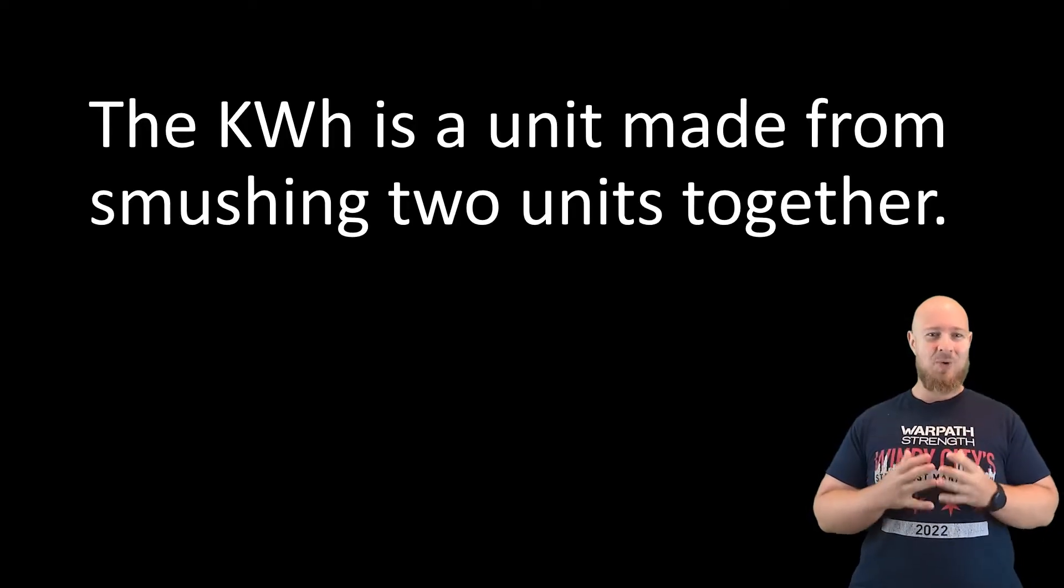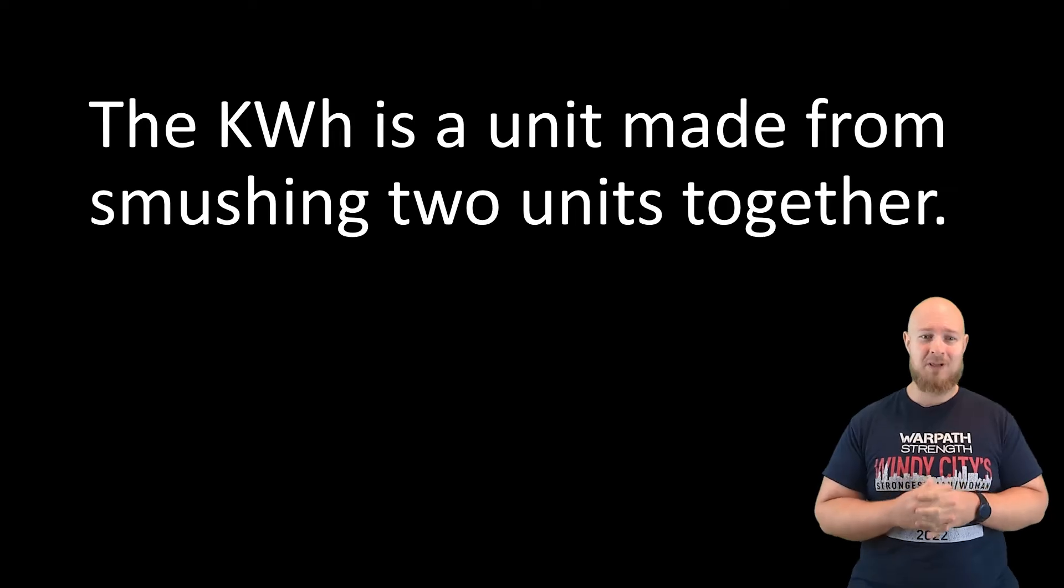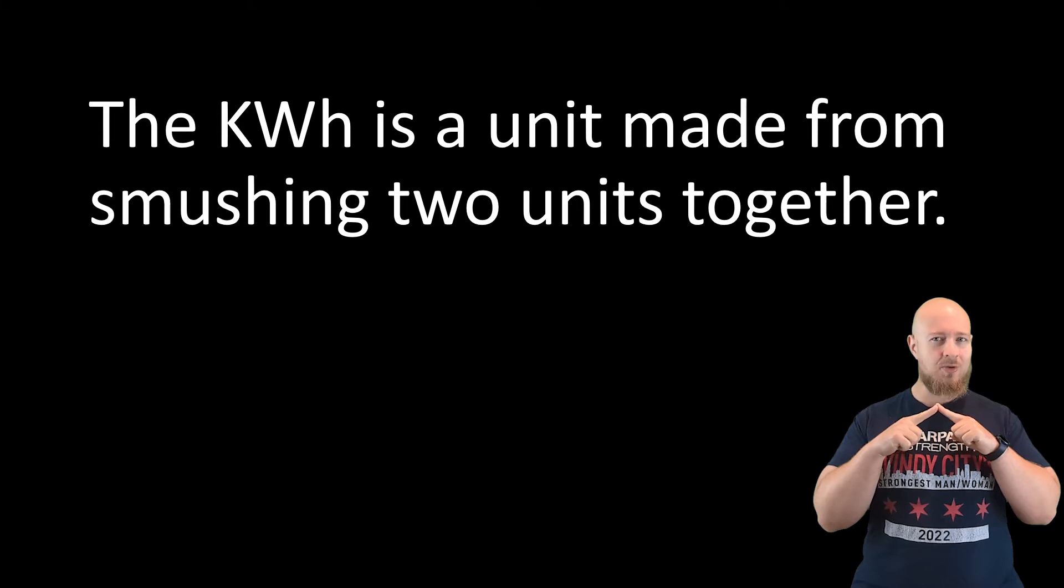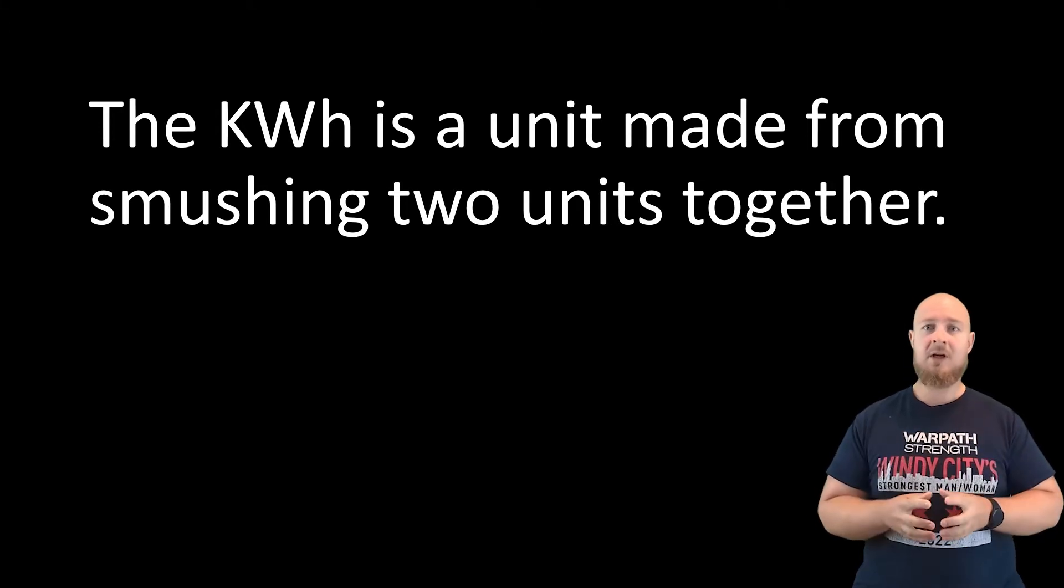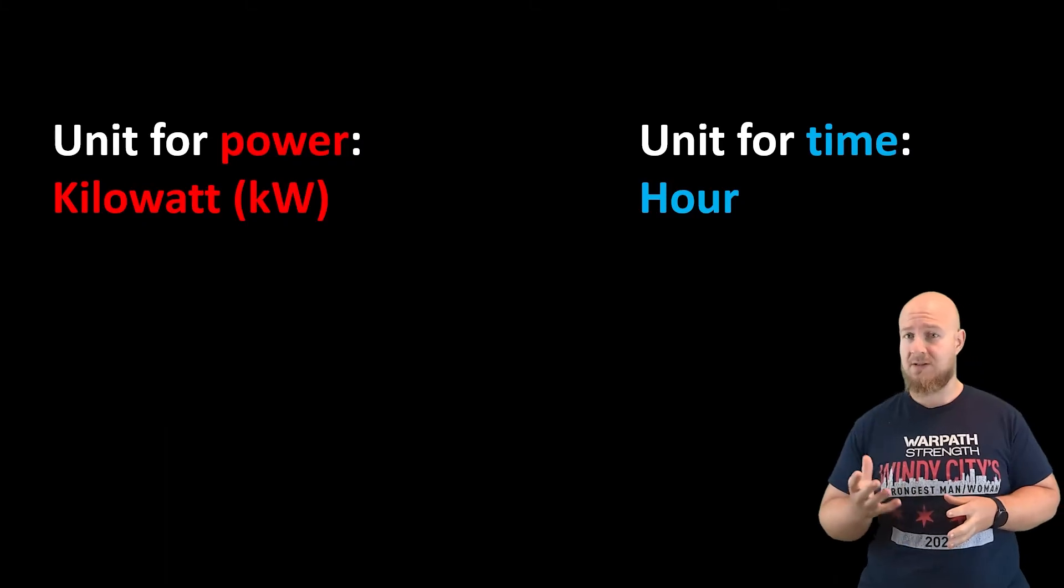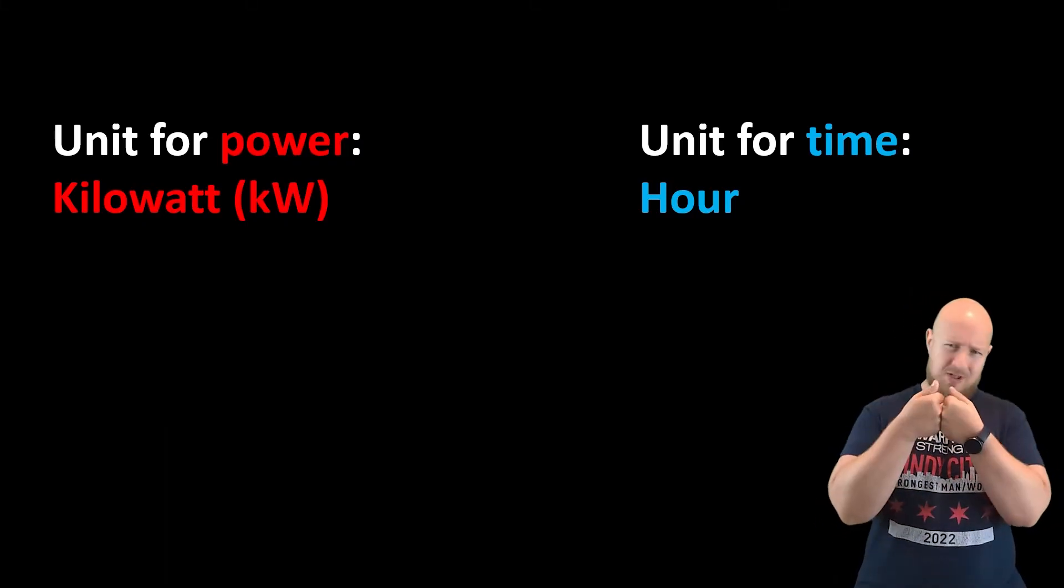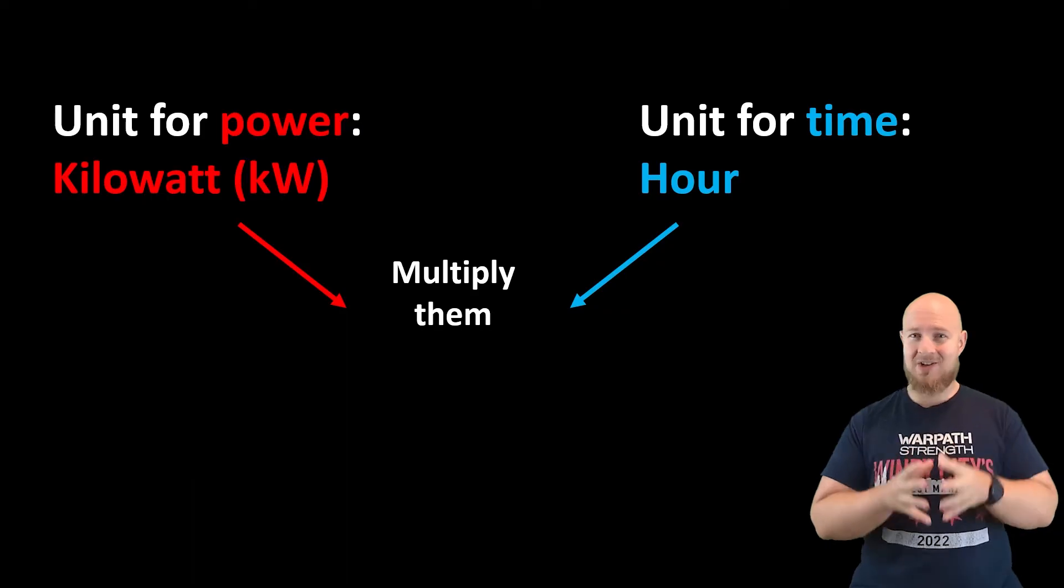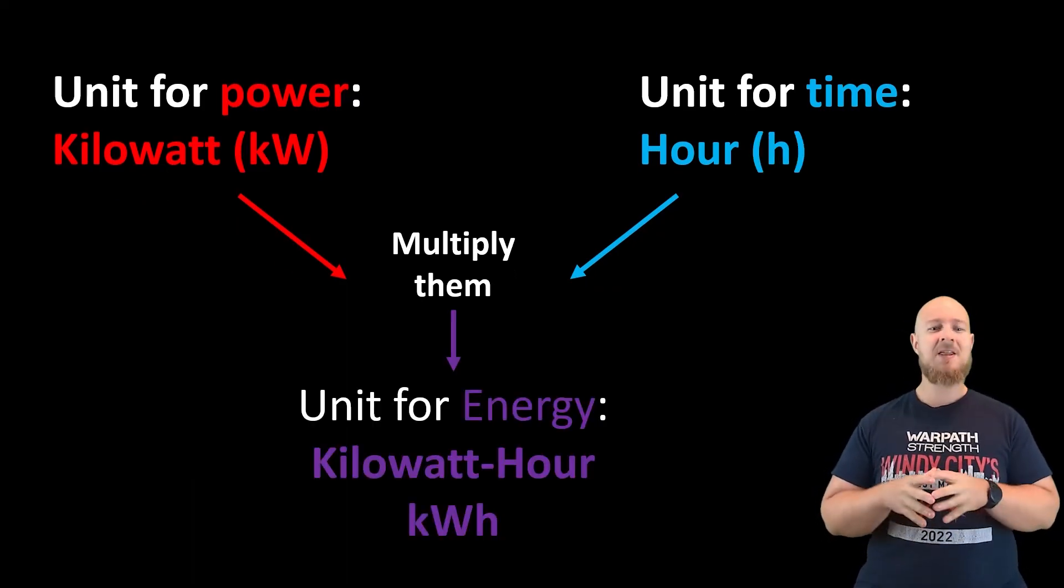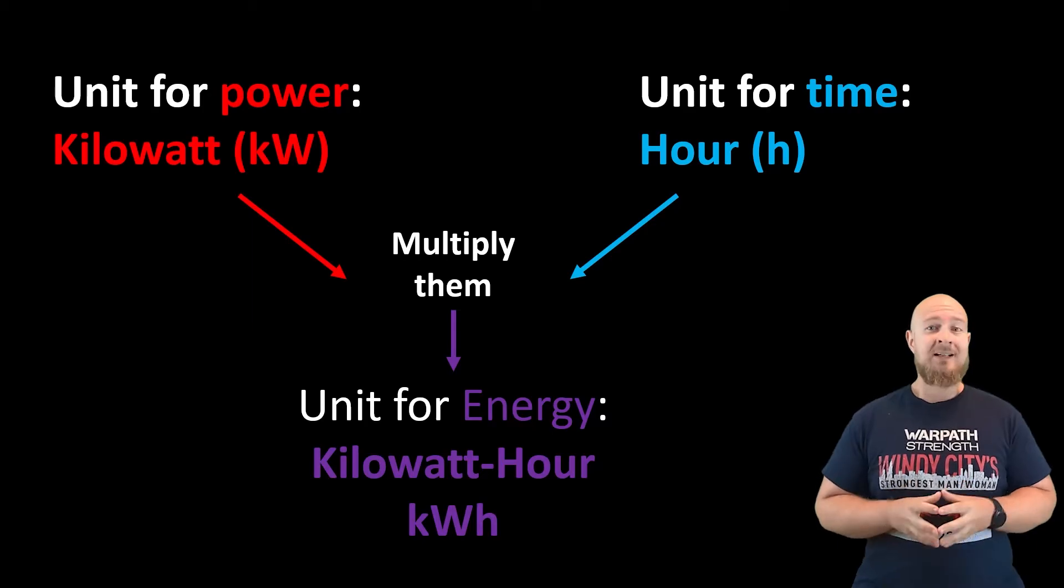But let's show an example of how to do this math with watt hours as a unit. The unit kilowatt hours is made for multiplying a power unit by a time unit, effectively creating a new unit for energy. The unit for power is the kilowatt and the unit for time is the hour. When you multiply them, they smush together to create the catastrophic amalgam that is the shame of engineering everywhere: the kilowatt hour.